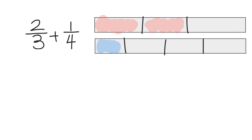The problem is right now our units are not the same — these thirds are much bigger than these fourths, so we can't add these directly. What we need to do is chop these intervals up into smaller pieces so that our intervals are the same. A nice system for doing that is to take each of the thirds and cut them into four pieces, and take each of the fourths and cut them into three pieces — kind of like the opposites. If we do that, we'll get 12 pieces from each tape.